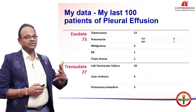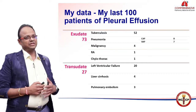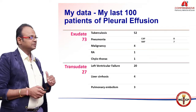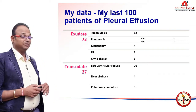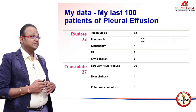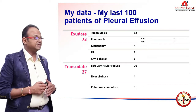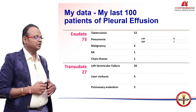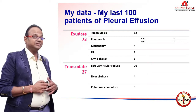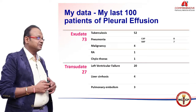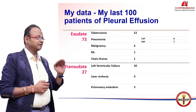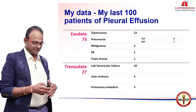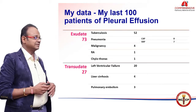When I looked at the etiology, as one would expect, the majority of patients had tuberculosis — 52 in my series. Pneumonia, CAP and VAP put together, were 15; malignancy 4; rheumatoid arthritis 1. For transudative pleural effusions, the majority had left ventricular failure, followed by liver cirrhosis and pulmonary embolism.